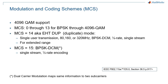802.11n had 77 MCS schemes, 802.11ac had 10, and 802.11ax had 12. 802.11be has 14 MCS schemes and two additional ones — MCS 14 and 15 — for specific purposes. The first 14 schemes cover the range from BPSK to 4096 QAM. MCS 14 is for EHT duplicate mode and represents the equivalent of single-user extended range in 802.11ax. MCS 15 is for dual carrier modulation, which maps the same information to two sub-carriers.